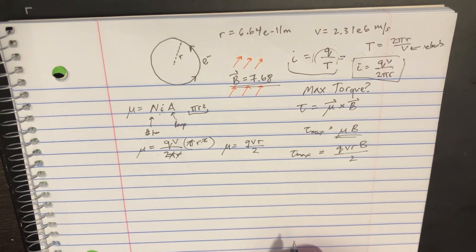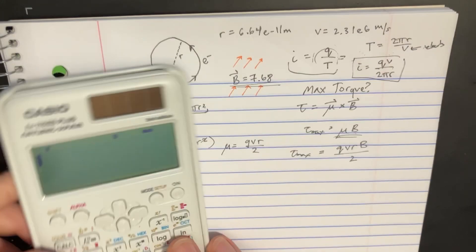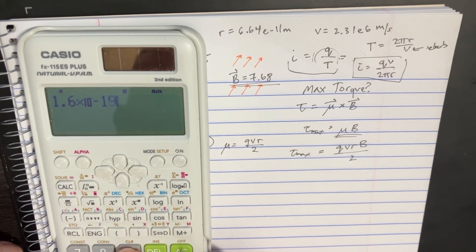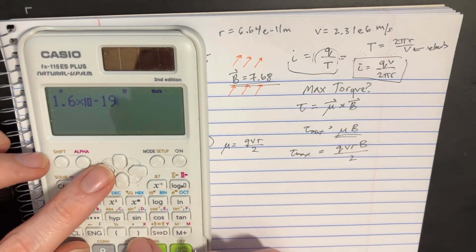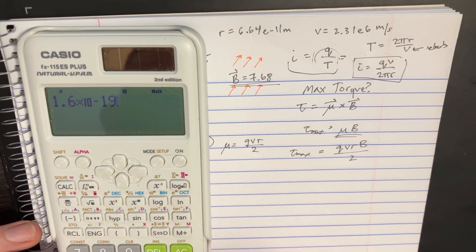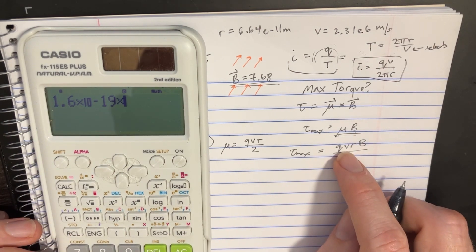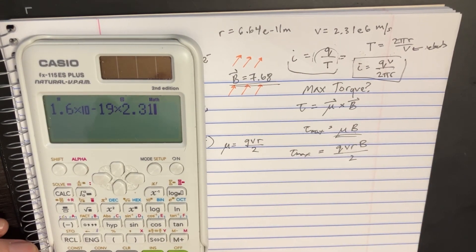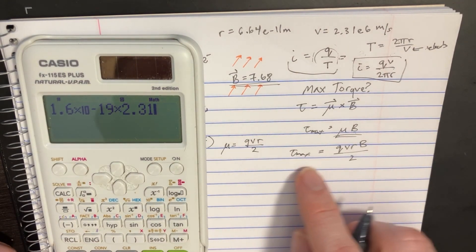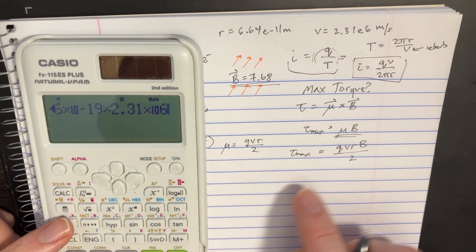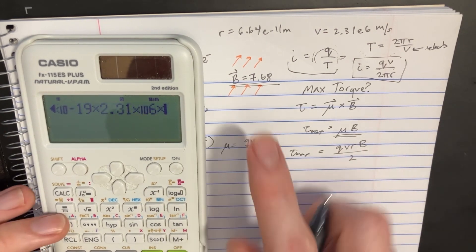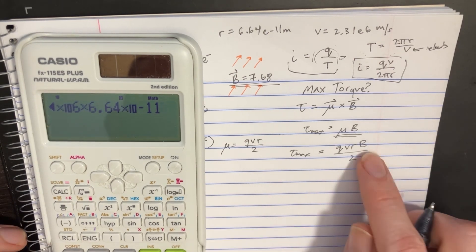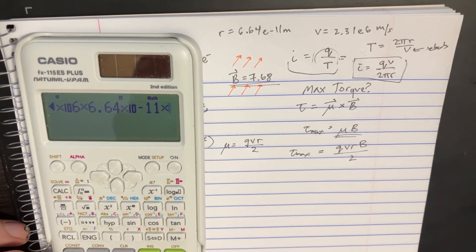This should give us the maximum torque. Q is 1.6 × 10^-19 because it's an electron. Then we multiply by the velocity, 2.31 × 10^6, and r is 6.64 × 10^-11.